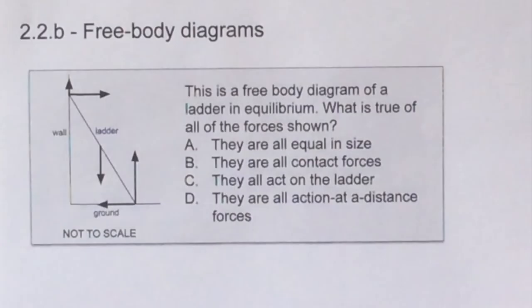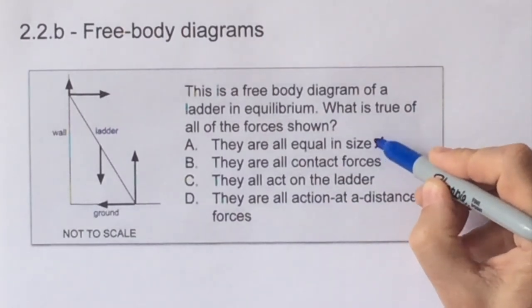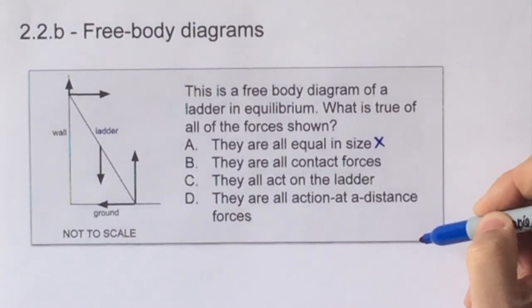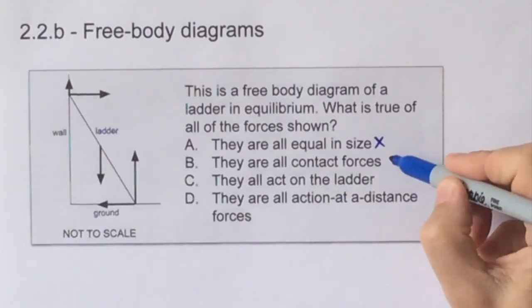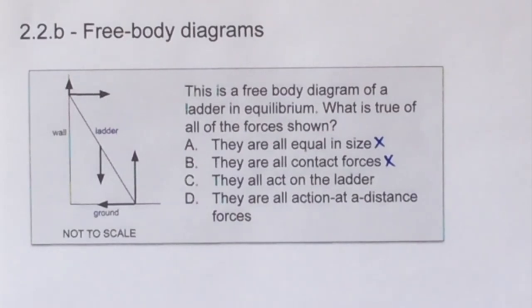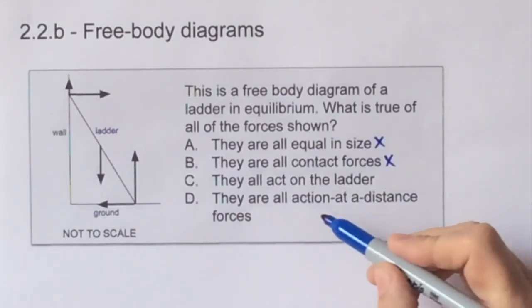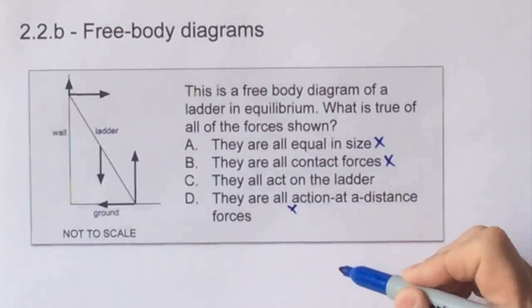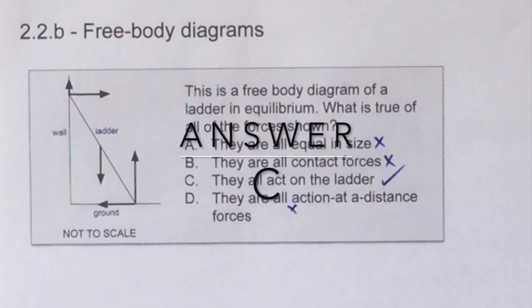When we look at this diagram with the five forces, we can see that there is no reason for the forces all to be the same size, as is suggested in answer A. And in any case, there are three vertical forces, so they can't all be equal in size if they're going to balance. And secondly, the middle force, the weight, is an action at a distance force, whereas the other four which are shown are contact forces, and therefore neither B nor D can be correct. And that leaves us with C, and it's a free body diagram, and the forces do all act on the ladder.